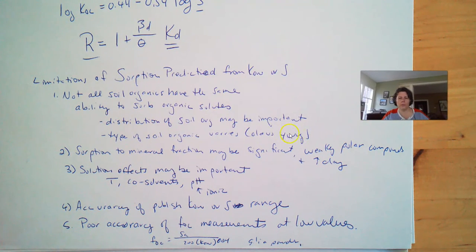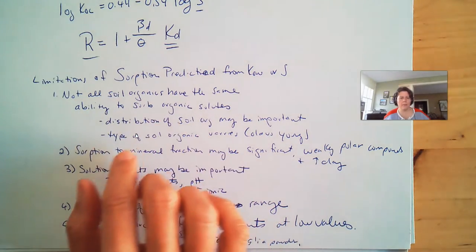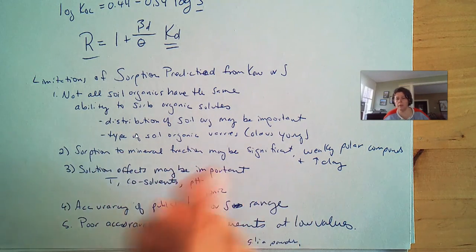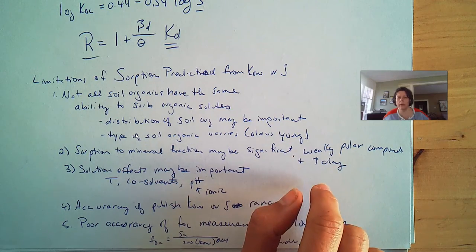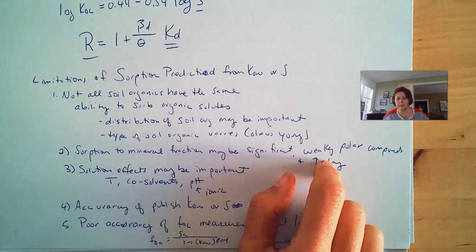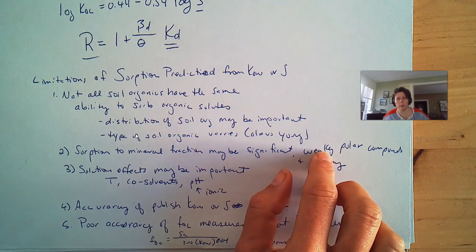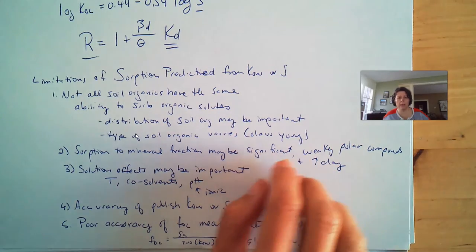Not all soil organics have the same ability to absorb organic solutes. The distribution of the organics on top of the soil - is it absorbed into it? Is it coated? Where is it located? And the types of organics on the soil can vary. Is it old versus young? Absorption to mineral fraction may actually be significant, especially for some very weakly polar organic compounds or if there's a lot of clay in the system.